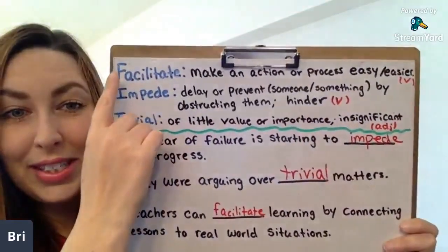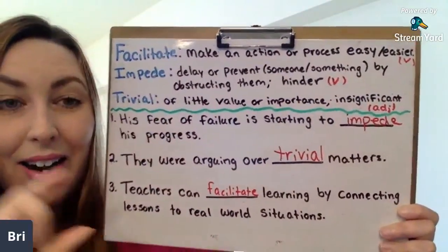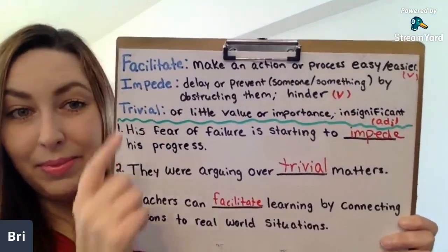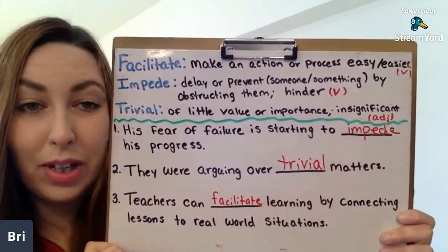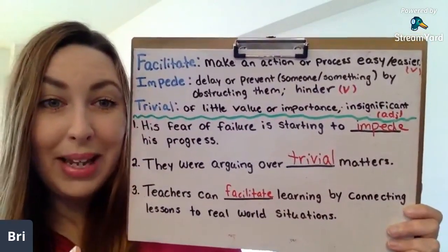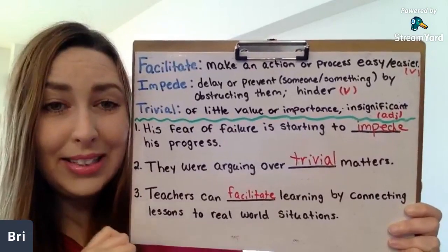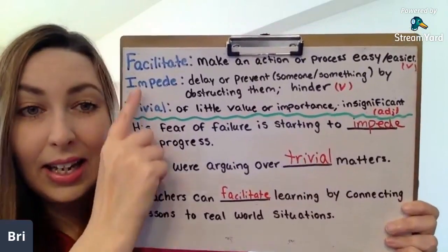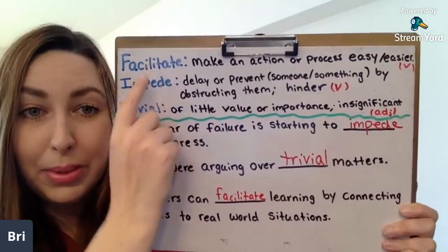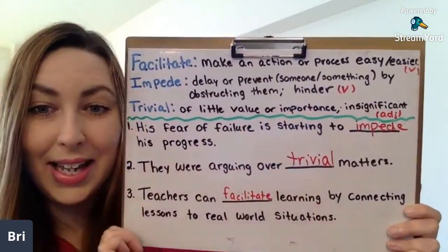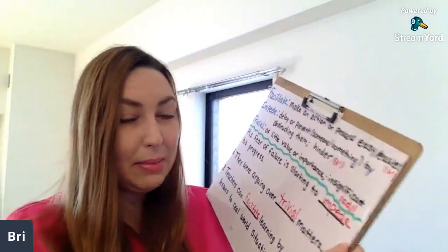So again: facilitate and impede are opposites. Trivial is the opposite of important. Facilitate and impede are both verbs. Trivial is an adjective. So if you want to make some example sentences, I have a few minutes to spare and I can check some of your sentences. Remember, when making the sentences, these two are verbs and trivial is an adjective.